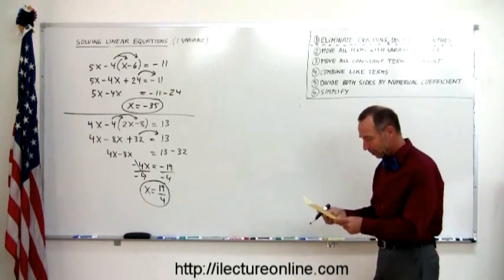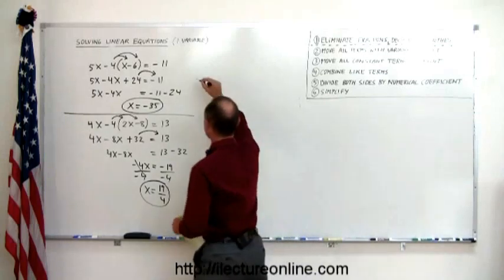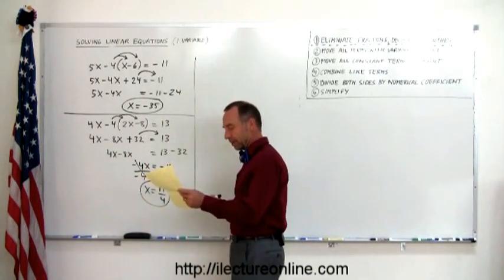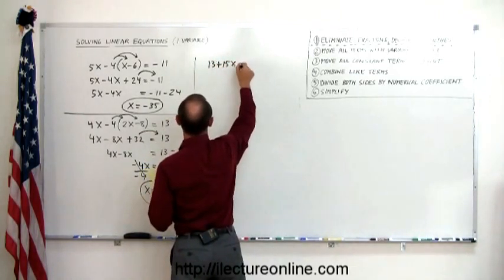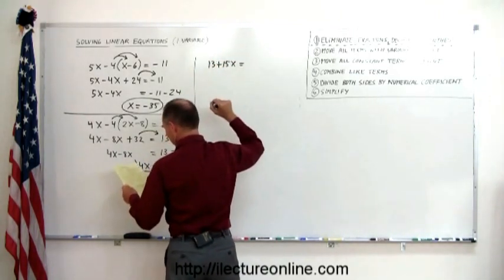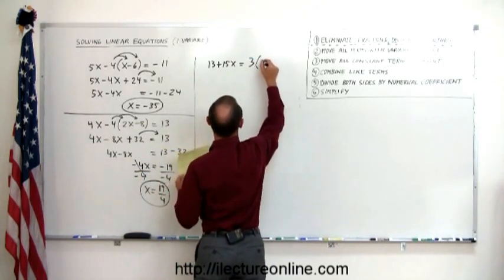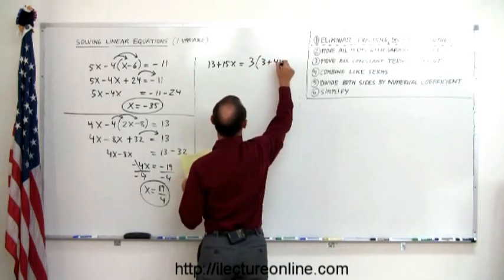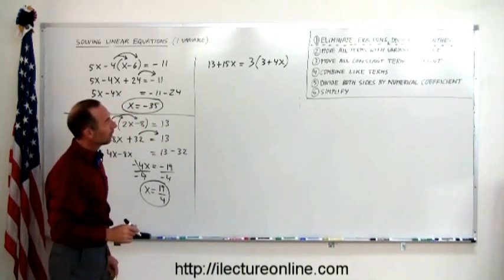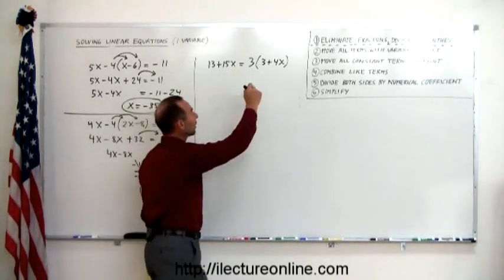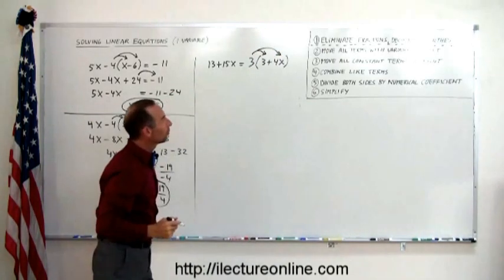All right. So hopefully you're beginning to feel comfortable with parentheses. Let's do one more, just for good measure. How about this? 13 plus 15x equals 3 times 3 plus 4x. Okay. We'll put the parentheses on the other side. Again, first step is get rid of the parentheses. We do that by distributing the 3 with both terms inside the parentheses.